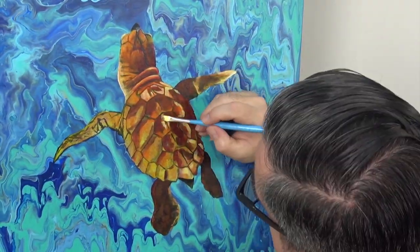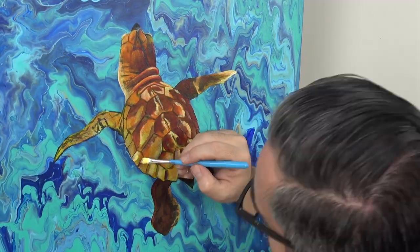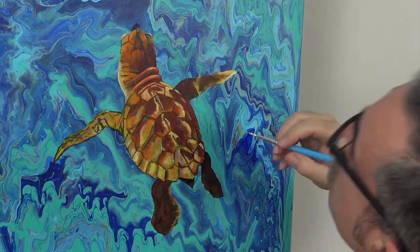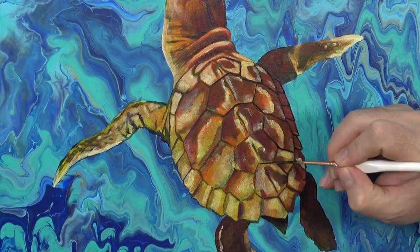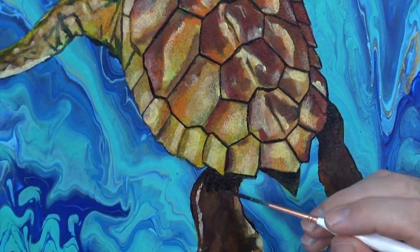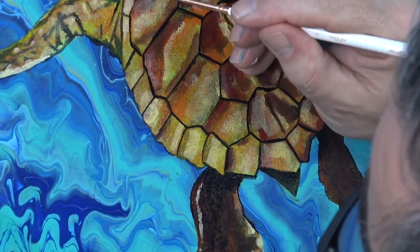This turtle is full of oranges and reds, essentially complementary colors, and this also works really well with the background. But you can use any mix that you think works, or that works with your decor. Once you're happy with the colors, redefine the turtle with Lamp Black.